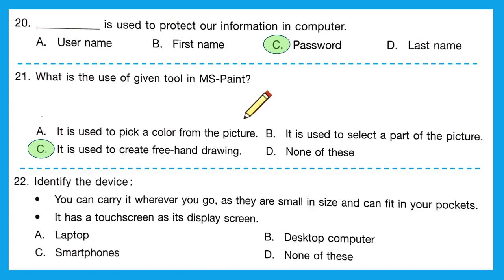Question 22: identify the device — you can carry it wherever you go as it is small and fits in your pocket, and it has a touch screen. Option A, laptop — has touch screen but doesn't fit in pockets. Option B is also incorrect as it's too large. Option C, smartphones — can fit in pockets and does have a touch screen. So option C, smartphones, is the right answer.